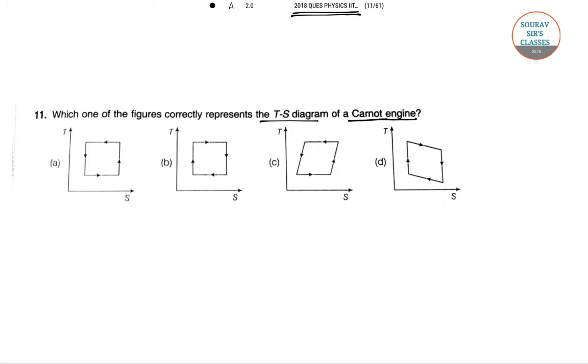So Carnot cycle, you will first see this is your basic diagram. Here from here you will be adiabatic. This to this adiabatic again and then this to this is isothermal. So this is T1, this is T2. Take it as ABCD format.